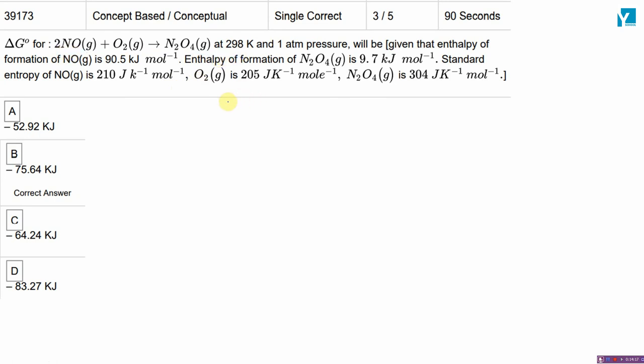You determine delta H-naught. You determine enthalpy change and entropy change. Enthalpy of formation of N2O4 and NO are already given. O2's enthalpy of formation is 0.